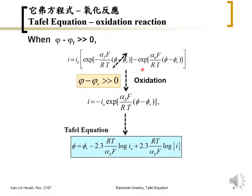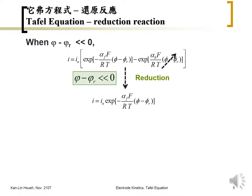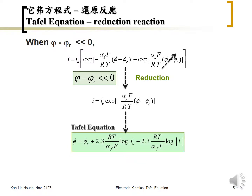When phi minus phi_r is greater than zero, only the backward (oxidation) reaction predominates, and we write it this way — phi increases as current density increases. On the other way, when phi minus phi_r is negative (less than zero), this term can be neglected, and reduction predominates. We take the log again on both sides and get this Tafel equation, where the potential decreases as current gets bigger, because there is a minus sign in the equation.